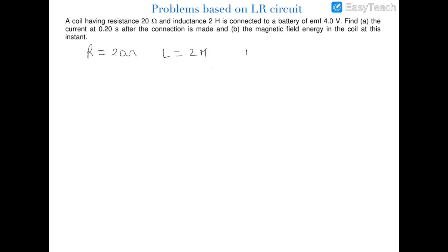The factors given in the question: resistance is 20 ohm, inductance is 2 henry, and the EMF of the cell is 4 volts. We have to find out the current at 0.2 seconds after the connections are made, and also the magnetic field energy. We know that this is a growth LR circuit.